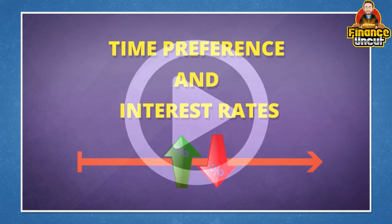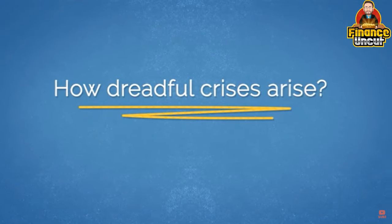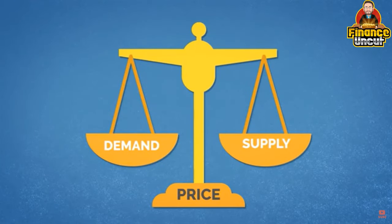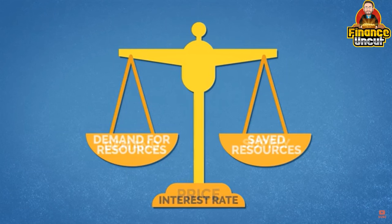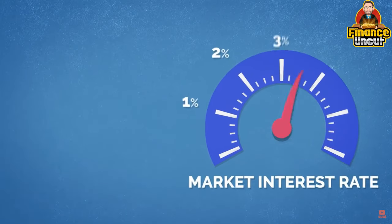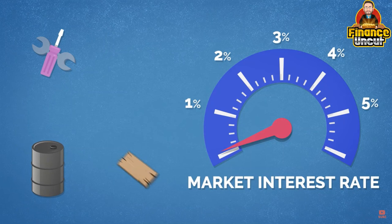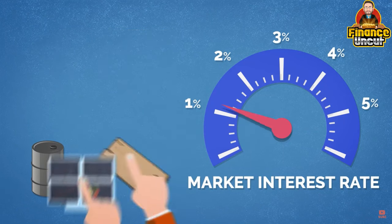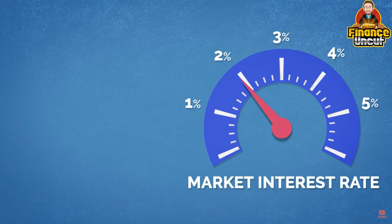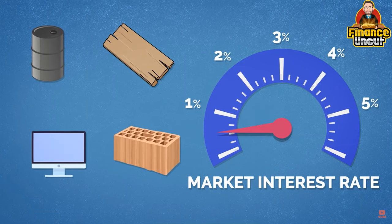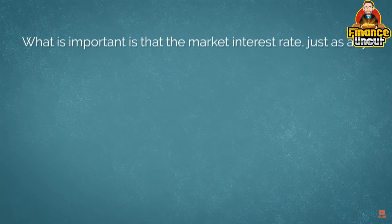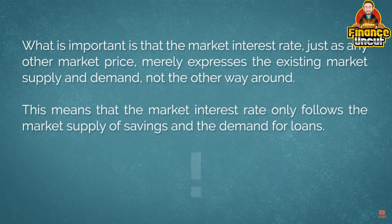In one of the previous episodes, we discussed time preference and interest rates. Today we will discuss how dreadful crises arise. Interest rates play an important role as they coordinate production in time. The market interest rate is a price just like any other — it balances the supply of savings and saved resources with the demand for loans and resources to be used for production.